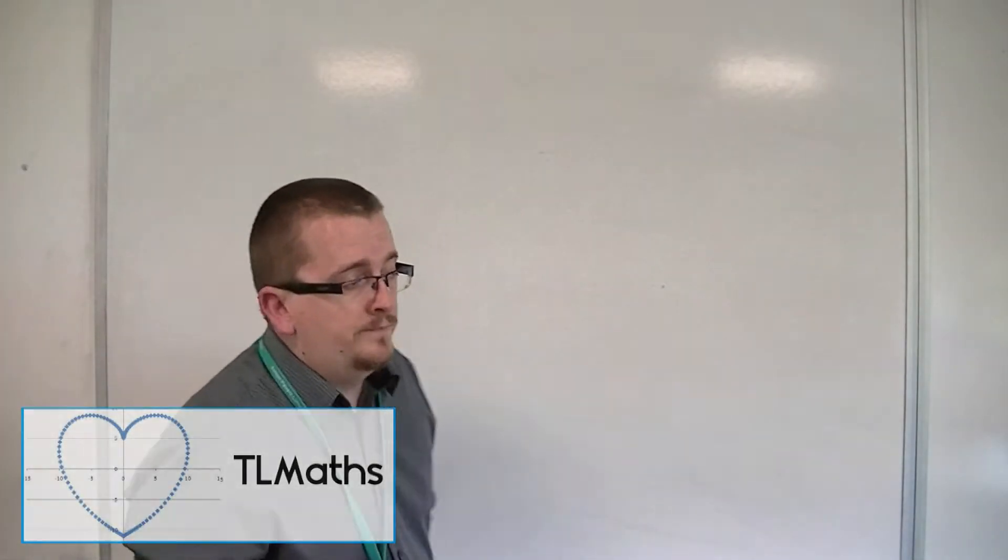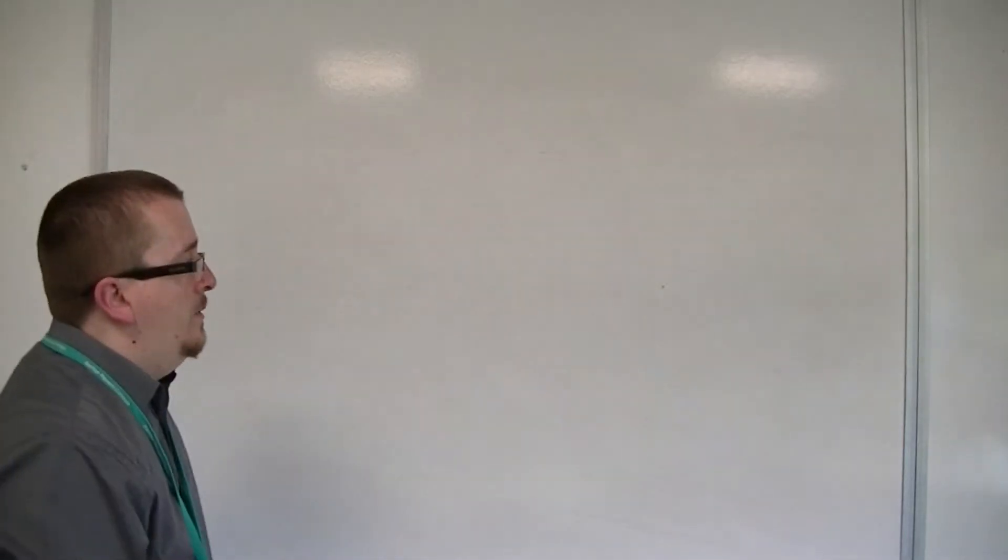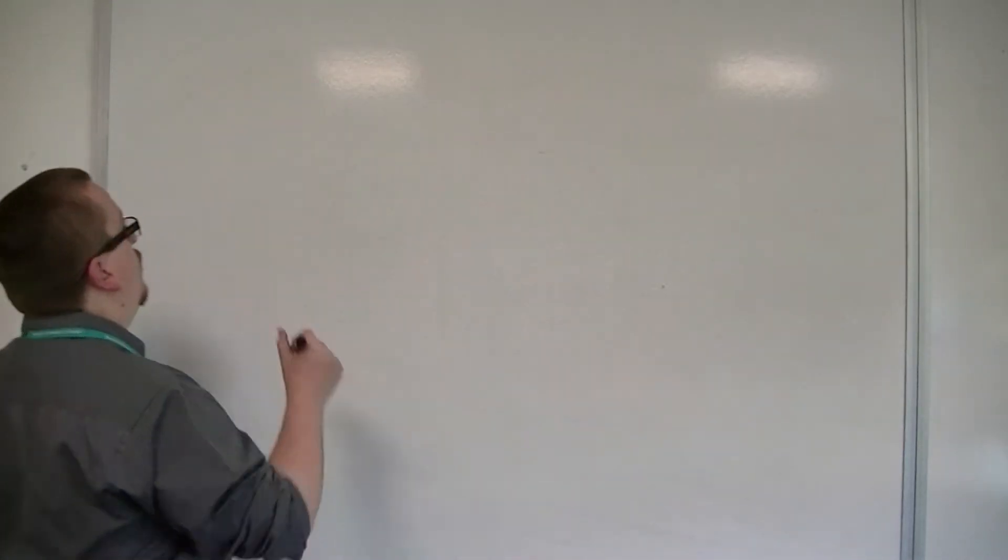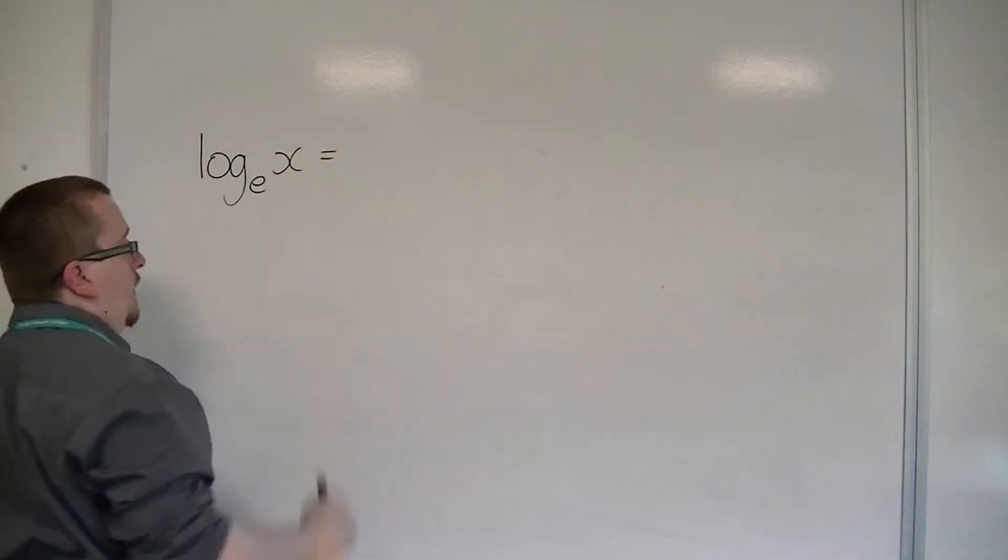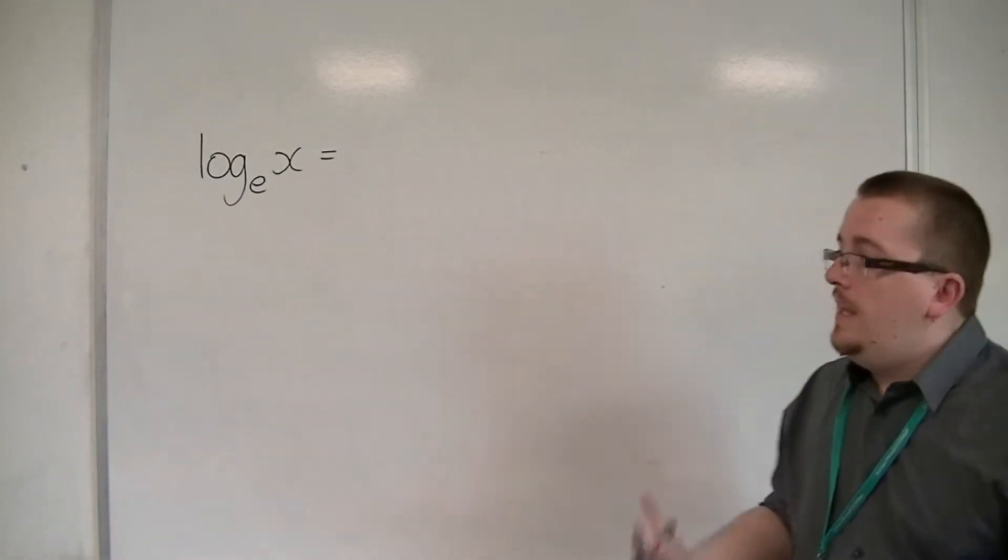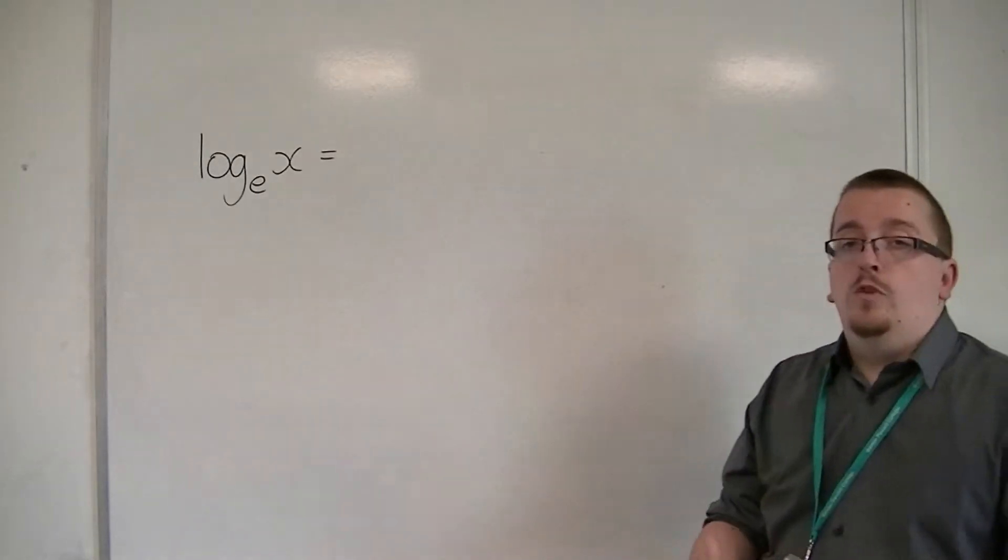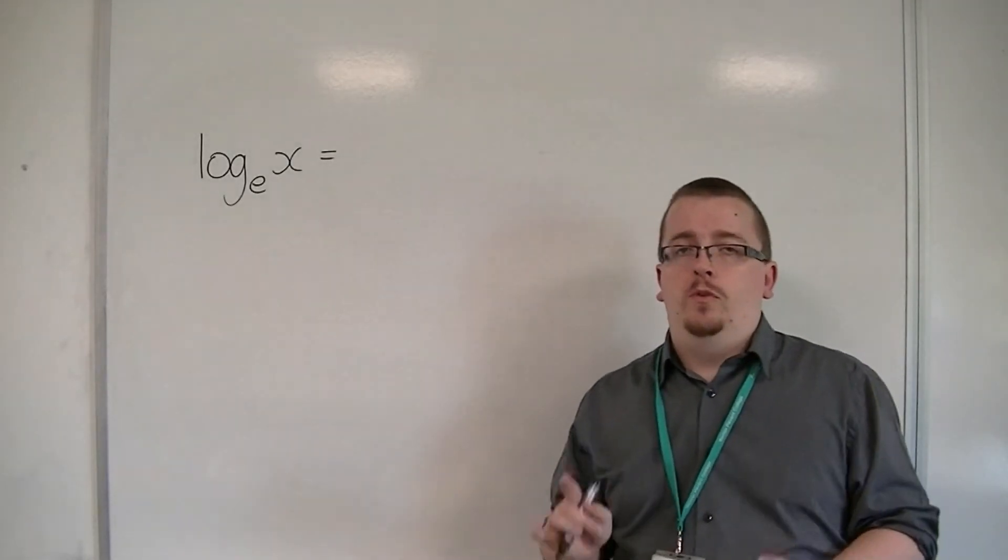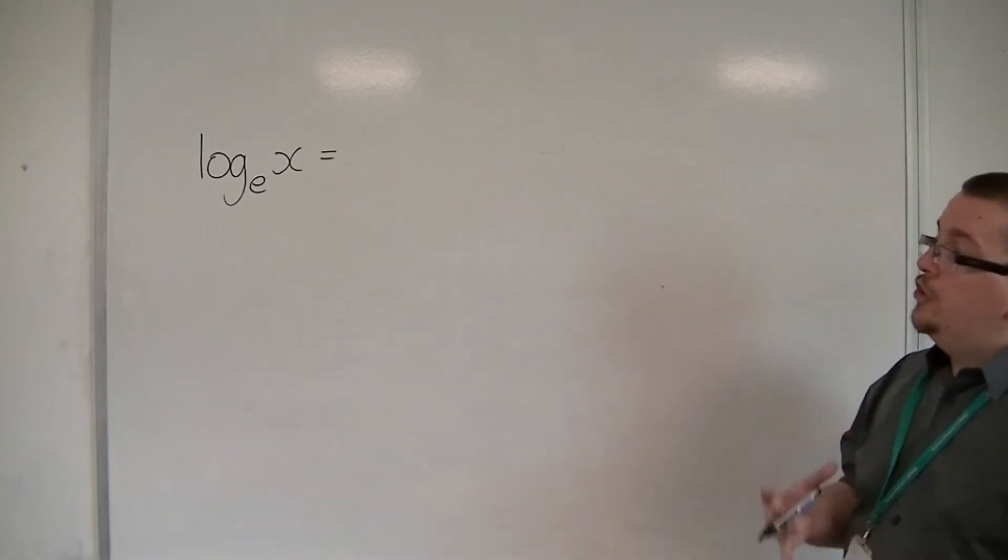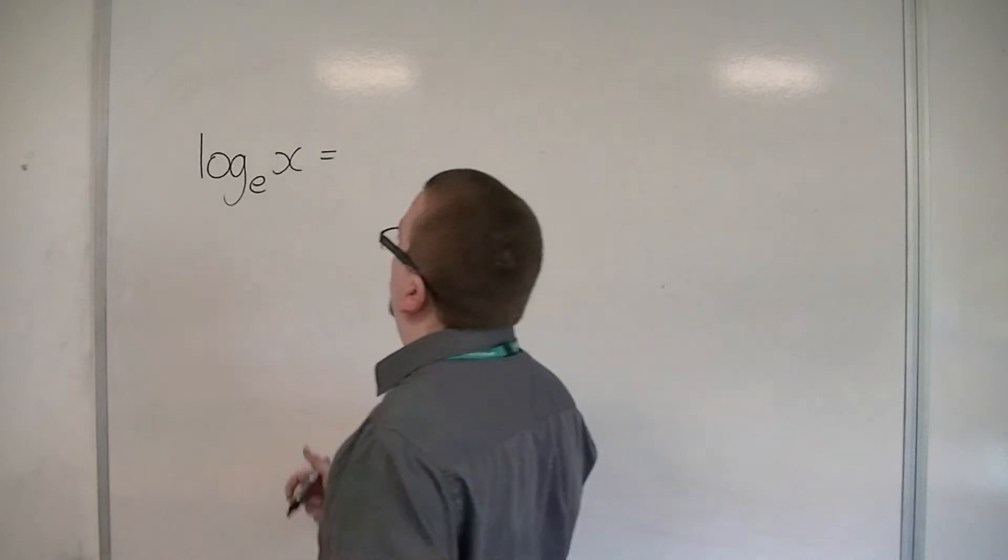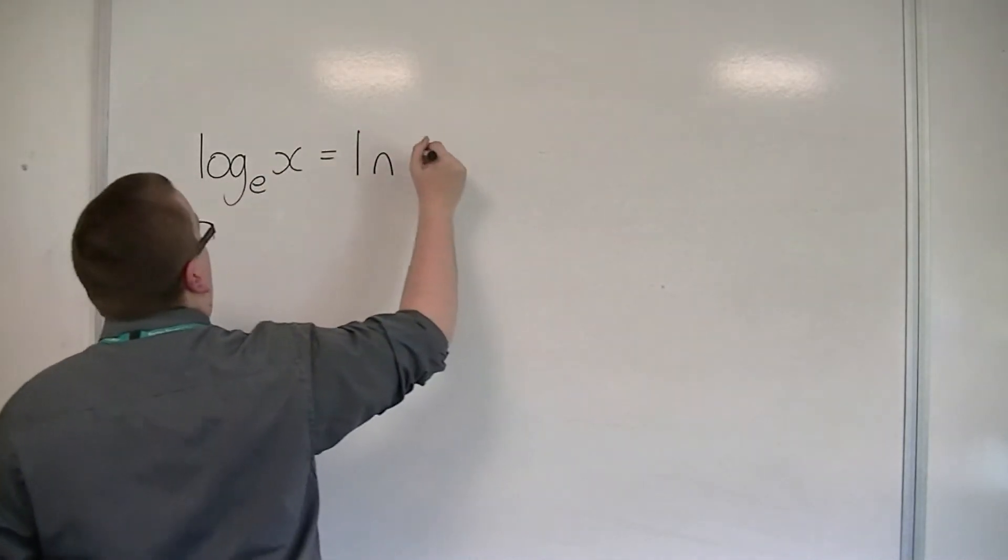We've learned about E and reminded ourselves about logarithms. Now, if we're talking about a logarithm with base E, because E is so commonly used, and the logarithm of base E, which we refer to as the natural logarithm, and because it's so widely used, a shorthand notation is brought in. So rather than writing log base E, we write ln of X.